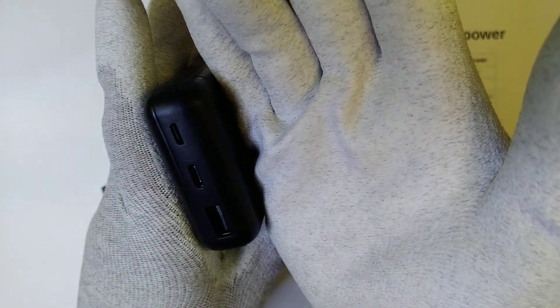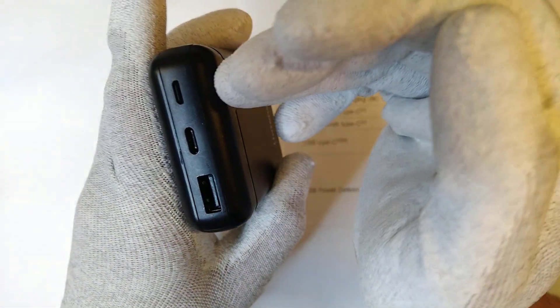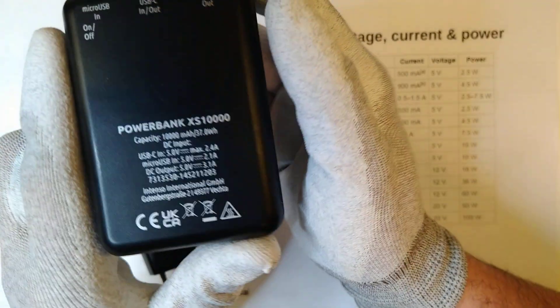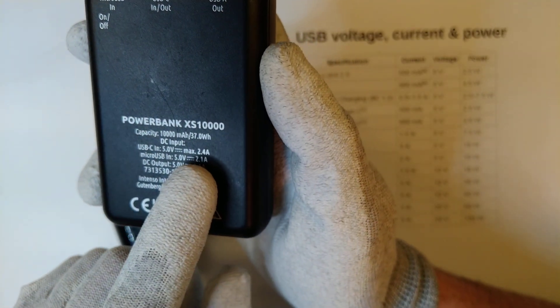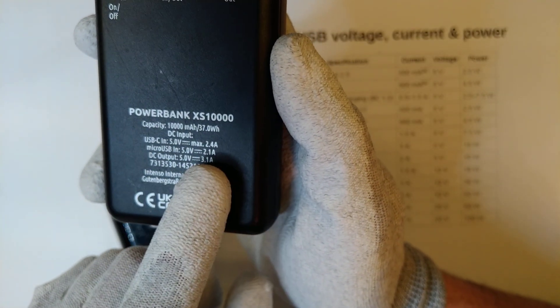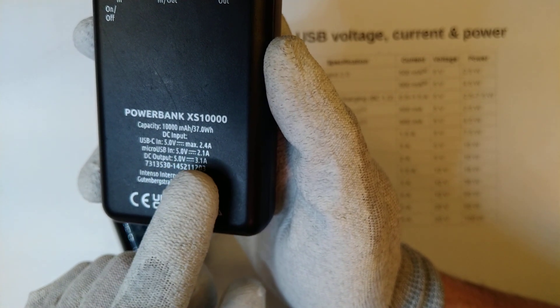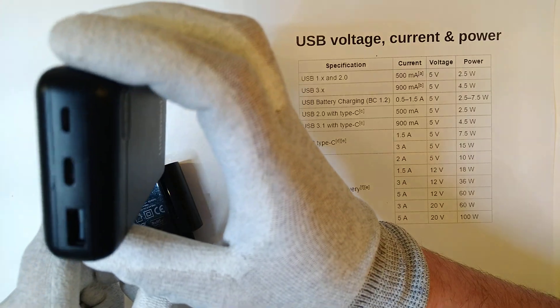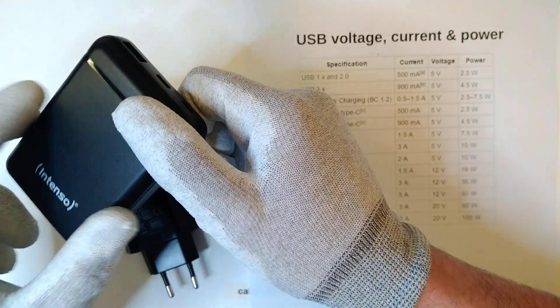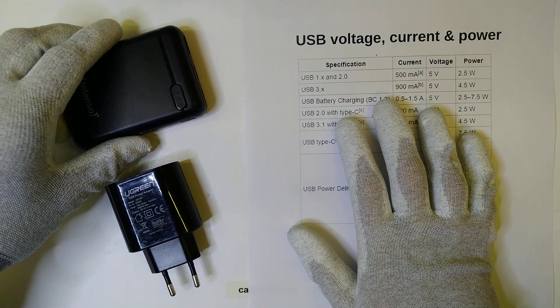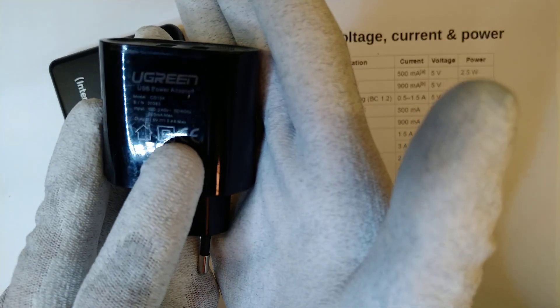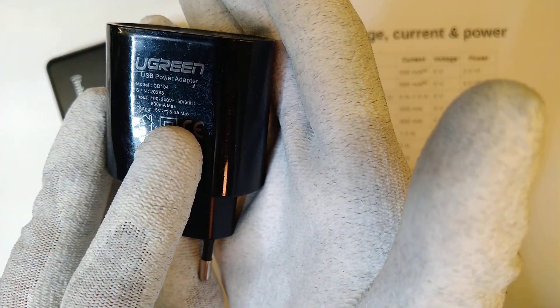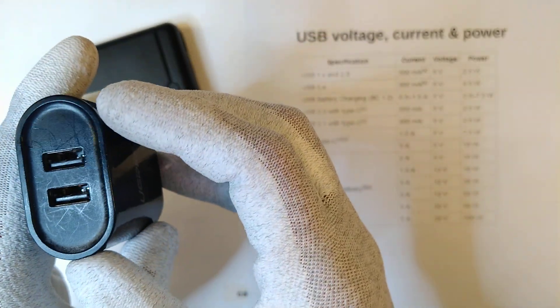It features a USB-A, a USB-C and a micro USB connector on the top and specifies different current capabilities for all three of them. It has a USB-C input current of 2.4A max, a micro USB input current of 2.1A, a DC output of 3.1A and none of this is actually specified within the USB specifications. It is similar with this wall outlet that specifies 5V at 3.4A maximum output current capability for those two USB-A connectors.